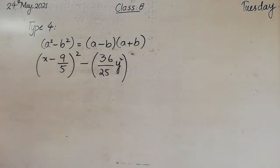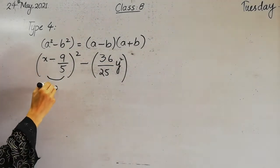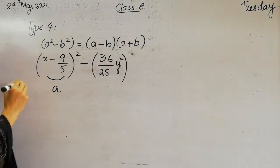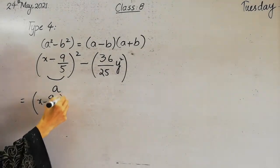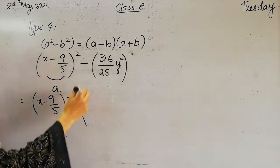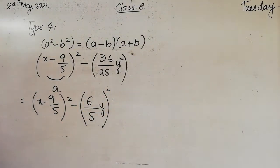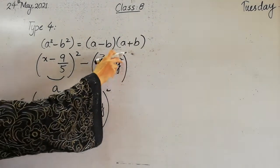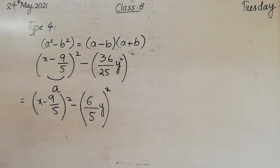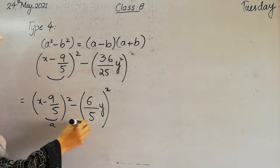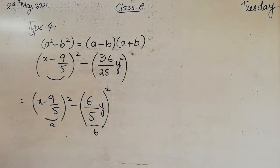For the numerator and denominator, you make the whole square complete, and then apply the formula. The first term x minus 9 by 5 is already in the form of a whole square, so this whole term is A. The second term 36 over 25 y square is not yet a whole square, so first complete the whole square. 36 is the square of 6, over 25 is 5, and y whole square. Now this is A and this is B, and both terms are separated with a negative sign, so simply apply the formula: a square minus b square.